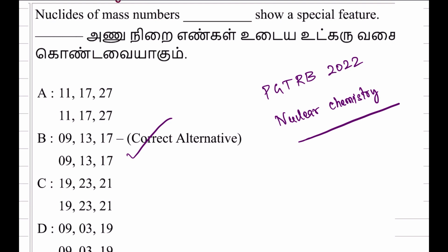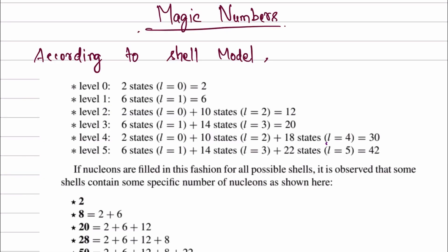Now, we will see the exam. Then we will see the magic number and its special feature. If you have the magic number, you will see the special feature. If you have the right answer, we will see the first magic number. The first one is the magic number. What do I know about the magic number?